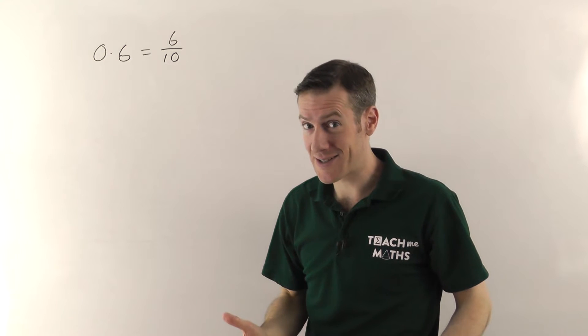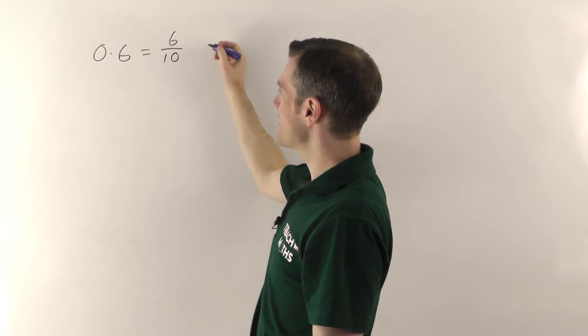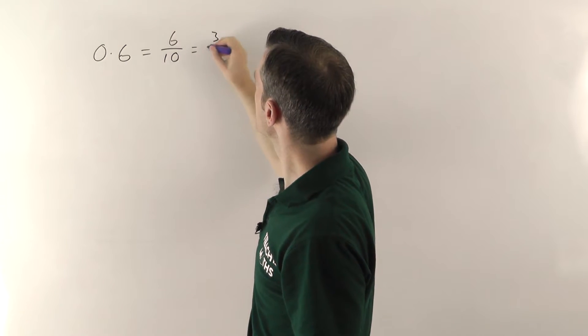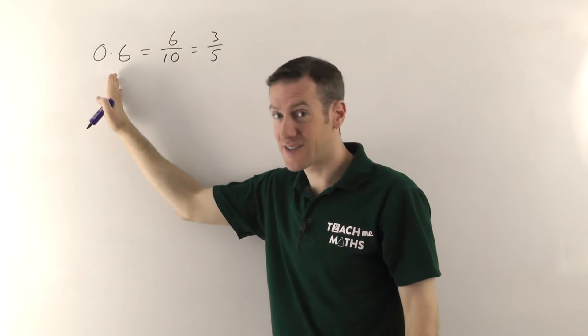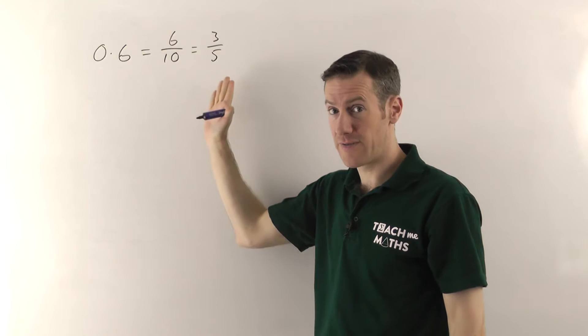Remember that with fractions, you must always cancel them down. So 6 tenths, if you cancel that down, becomes 3 fifths. Just divide the top and bottom by 2. So 0.6 as a fraction would actually be 3 fifths.